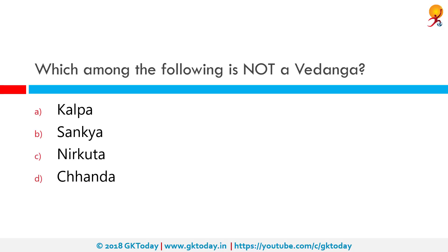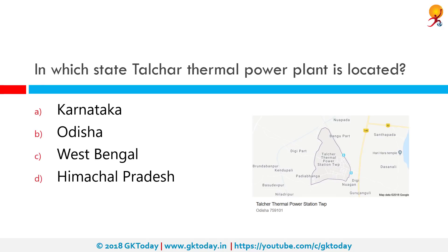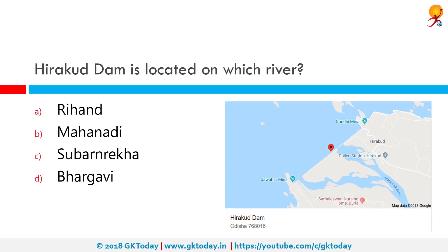Which among the following is not a Vedanga? The correct answer is Sankhya. In which state is the Talcher thermal power plant located? As you can see on the map, it is located in Orissa.